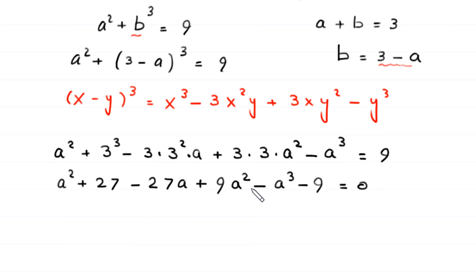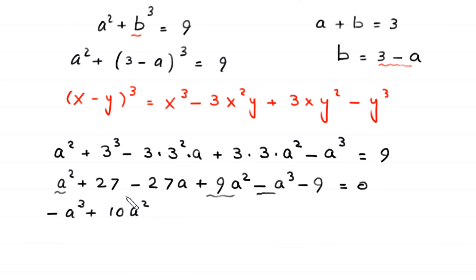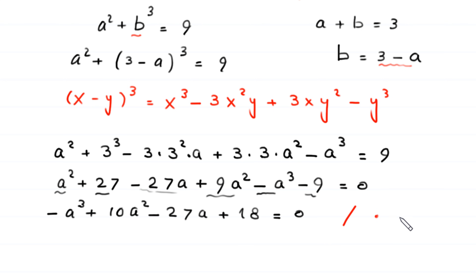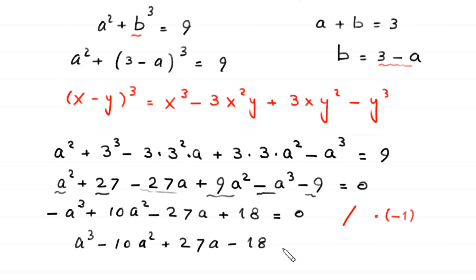Further simplifying and rearranging the terms: negative a cubed, then a squared plus 9a squared becomes plus 10a squared, then negative 27a, then 27 minus 9 becomes plus 18, all equal to 0. To make the leading term positive, we multiply the whole equation by negative 1. This becomes a cubed minus 10a squared plus 27a minus 18 is equal to 0.